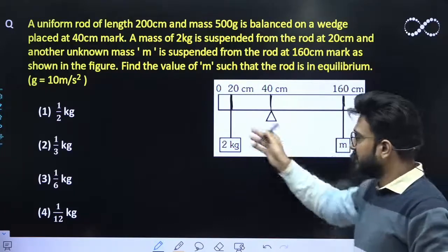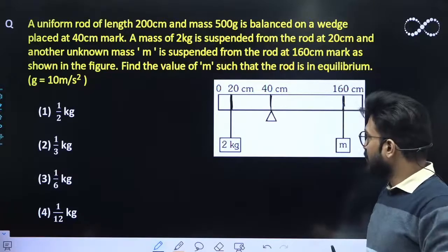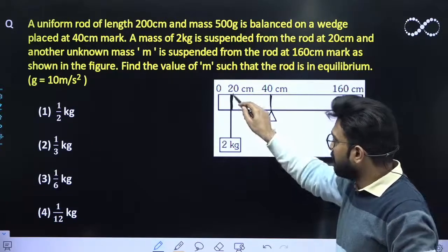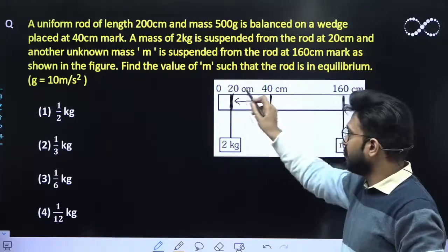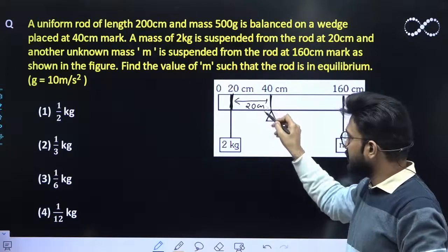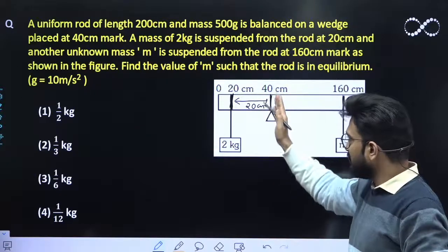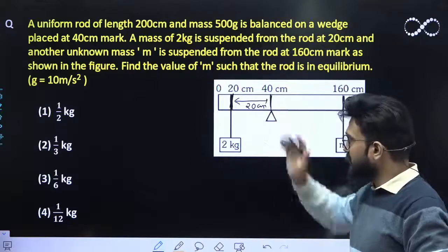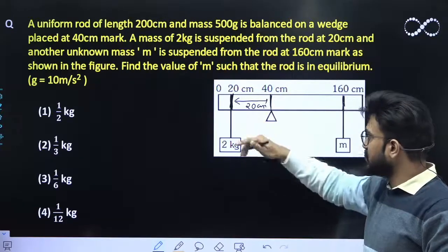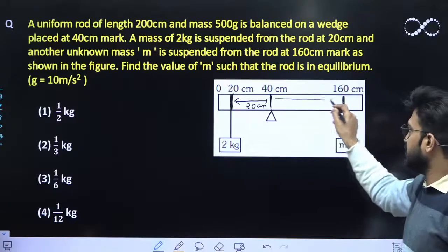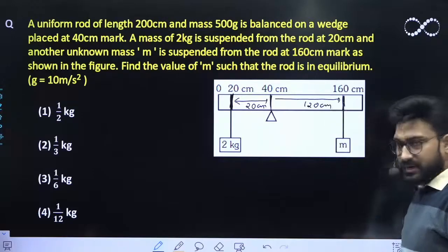So the whole system is in equilibrium, which means the net torque acting on the system must be zero. It is at a mark of 200 cm. The distance from the pivot is 40 minus 20, which is 20 cm. So the perpendicular distance of this mass from the equilibrium position, from its suspended position, is 20 cm. And this distance is 160 minus 40, which is 120 cm.